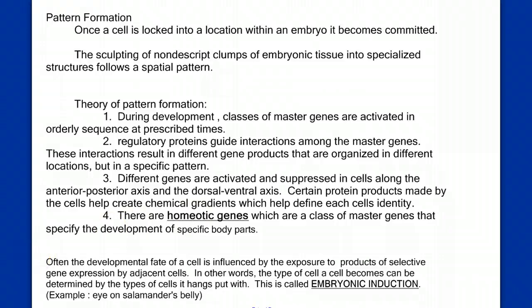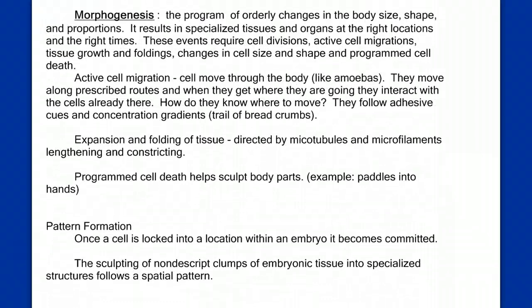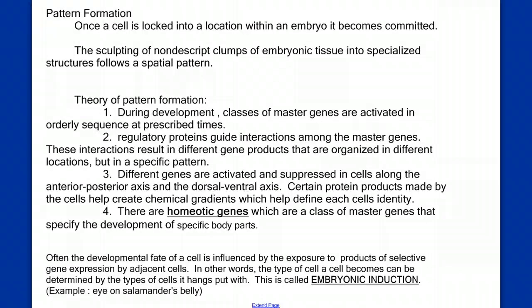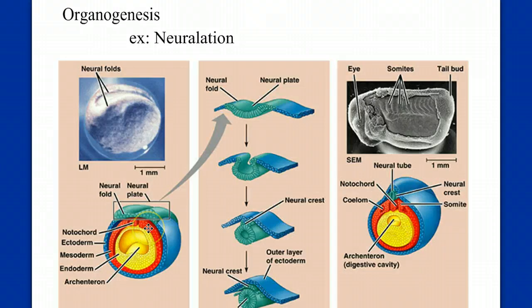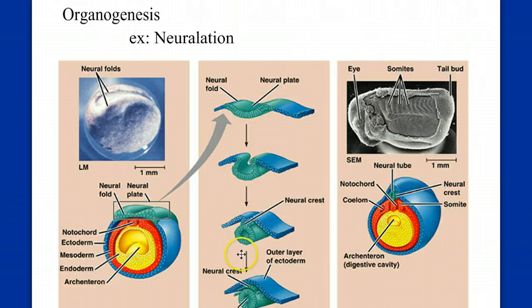After discussing pattern formation and morphogenesis, we'll talk about organogenesis — the genesis of organs. We'll use neurulation, the forming of the neural tube, as a specific example. As the body begins to form with the three germ layers — endoderm in yellow, mesoderm in red, ectoderm in blue — the ectoderm later rolls in on itself in a process called neurulation to form the neural tube, which gives rise to the entire nervous system.